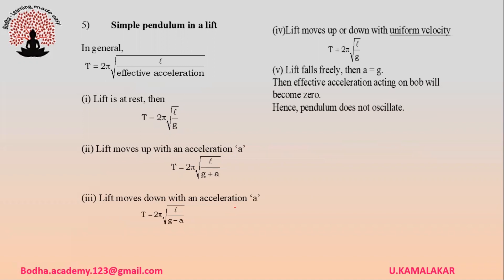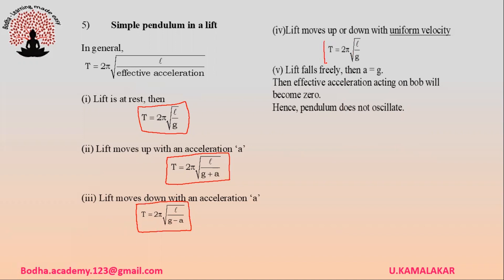Simple pendulum in a lift. In general, the time period is T = 2π√(l/g_eff). If the lift is at rest, T = 2π√(l/g). If the lift moves up with acceleration a, T = 2π√(l/(g+a)). If the lift moves down with acceleration a, T = 2π√(l/(g−a)). If the lift moves up or down with uniform velocity, there is no change in time period.